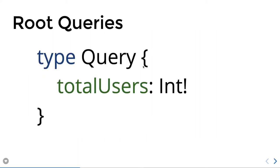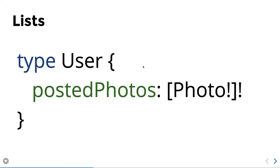In the schema we have three things: types, queries, and mutations. We have simple types like scalar types, and then object types — Photo, Course, and User are object types. Scalar types are properties like email, first name, and last name, which point to String, Boolean, Number, or Float.